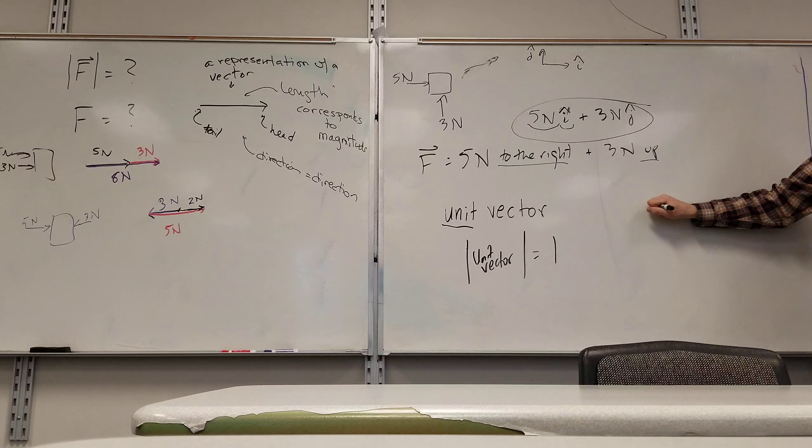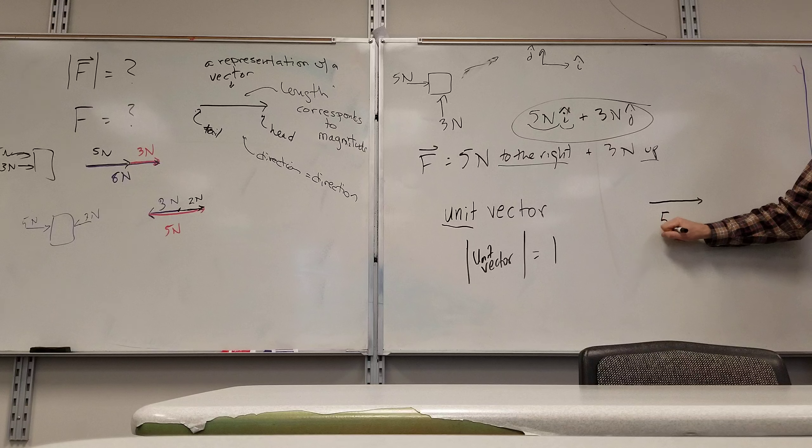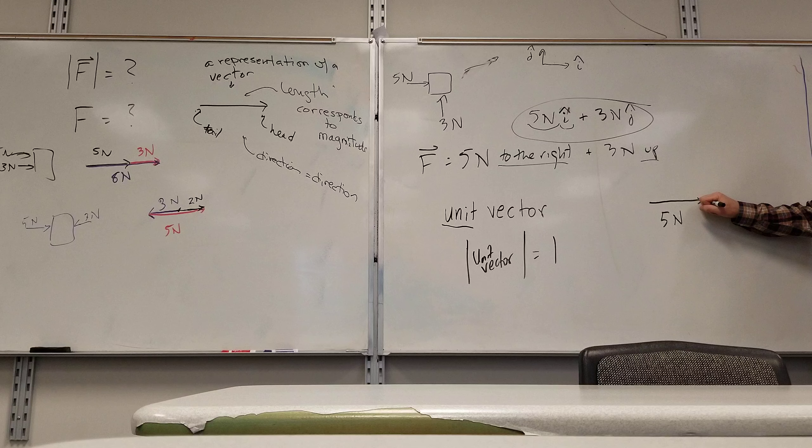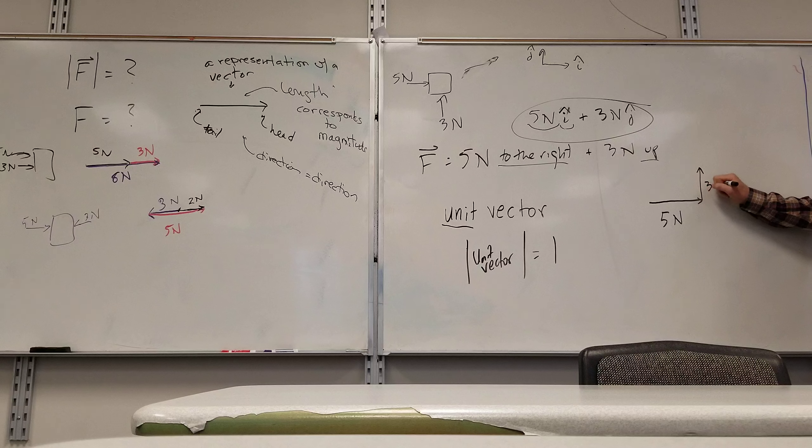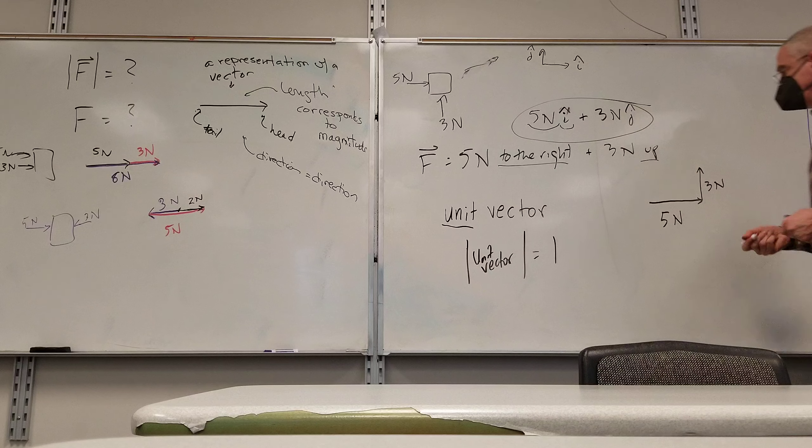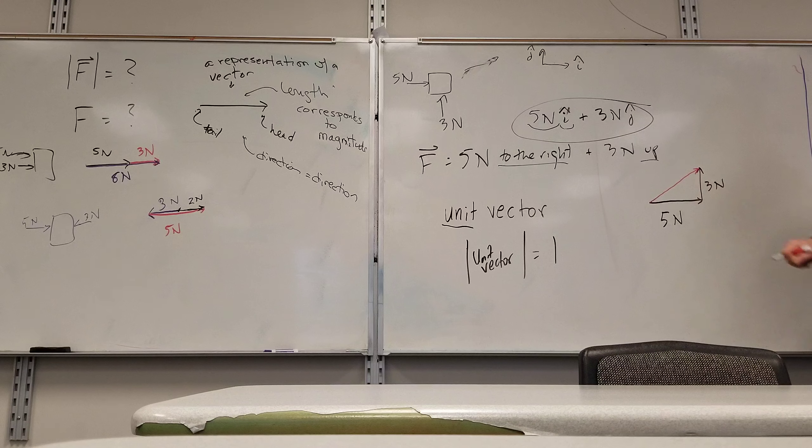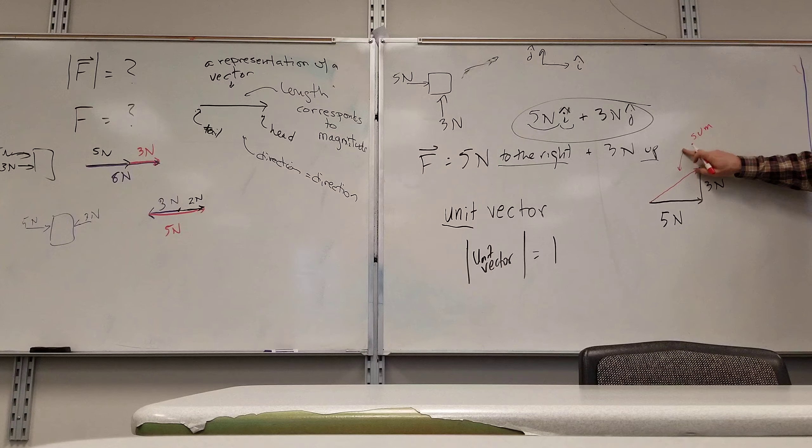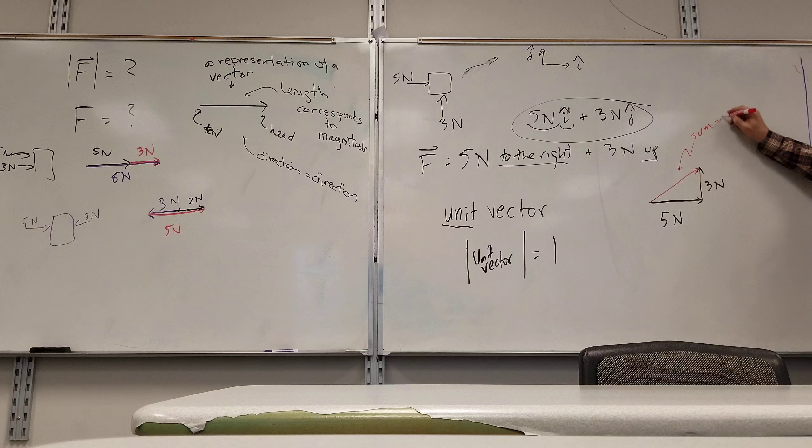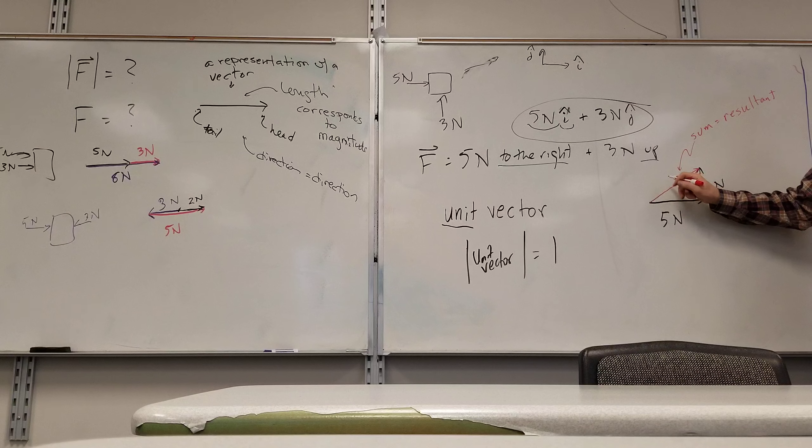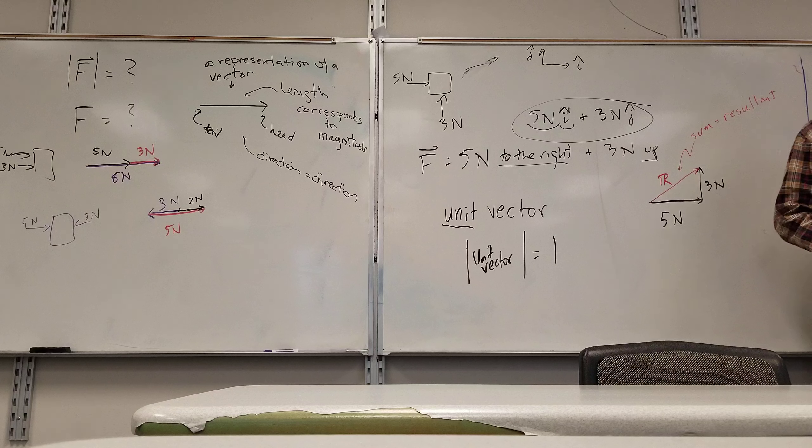Questions before we hit the two dimensions. Alright. So I'm going to draw one that's 5 newtons long. Plus 3. Well, 3 is going that way. So my resultant, from where I started to where I ended, my resultant is that. This is my sum otherwise known as the resultant.